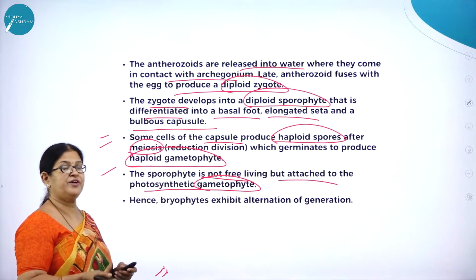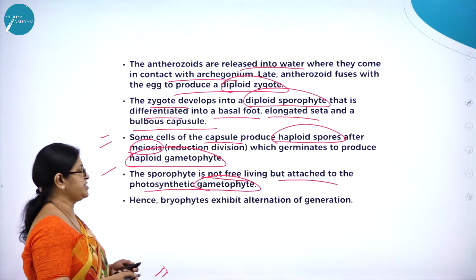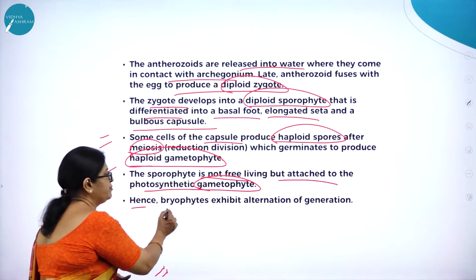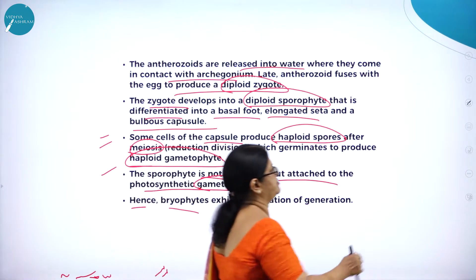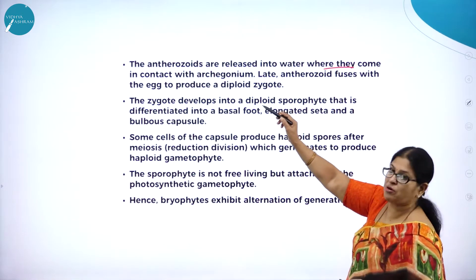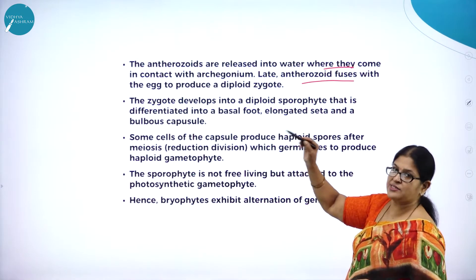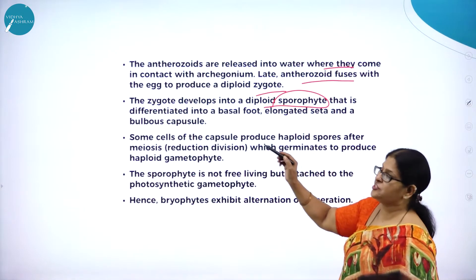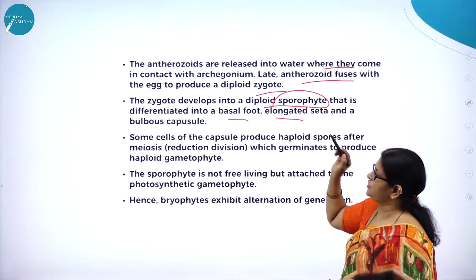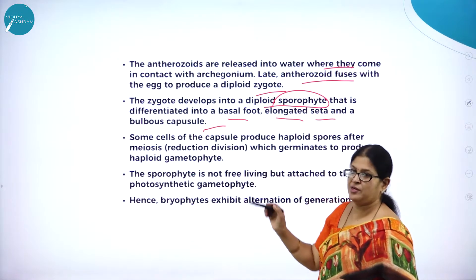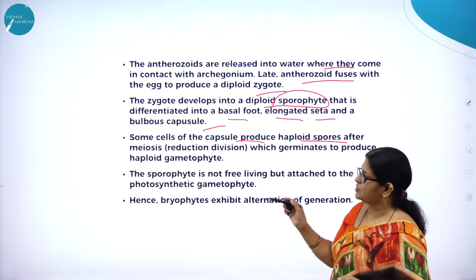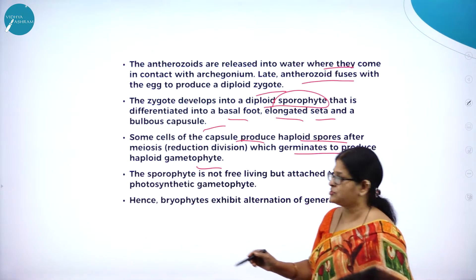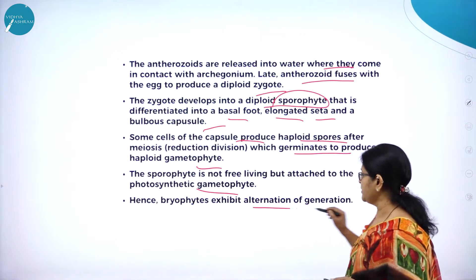The sporophyte is not free-living but is attached to the photosynthetic gametophyte. So bryophytes exhibit a very important phenomenon called alternation of generation, where sporophyte is followed by gametophyte. The antherozoids fuse with the single egg of the archegonia to produce a diploid zygote, which develops into the sporophyte, and haploid spores from its capsule germinate to produce the haploid gametophyte.